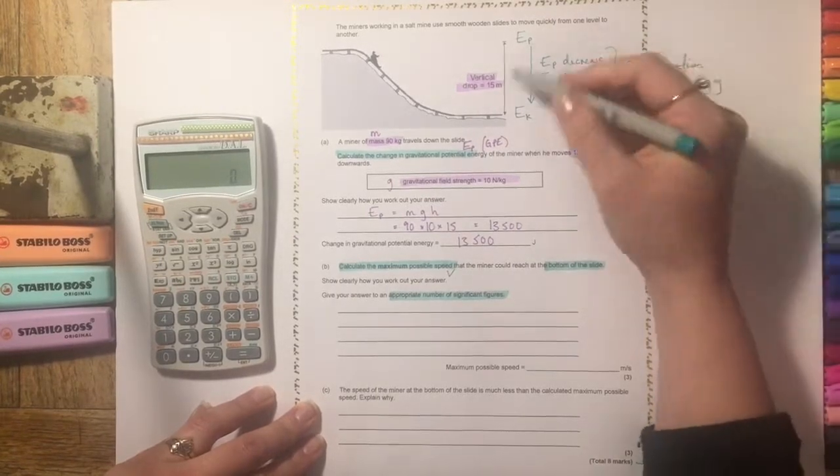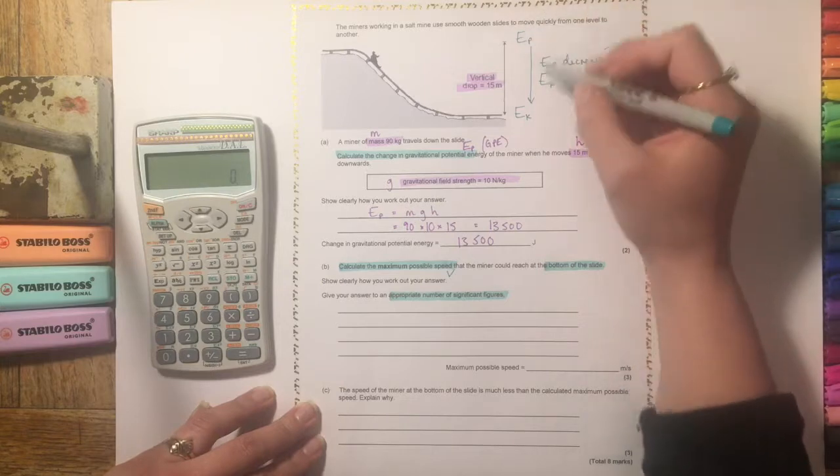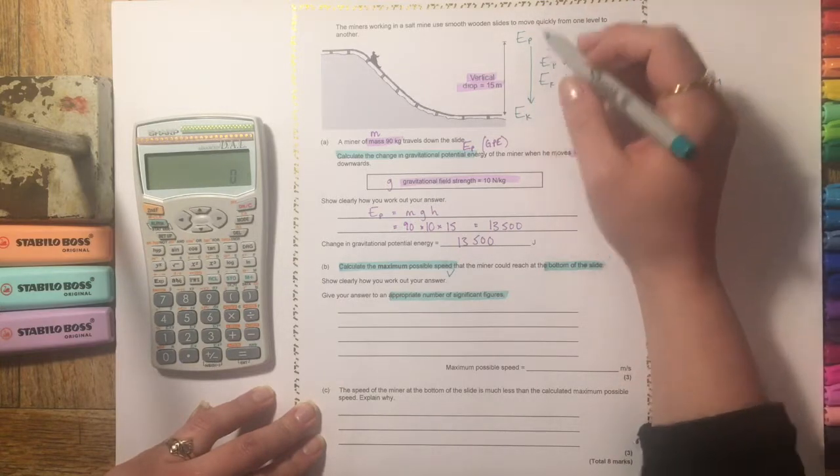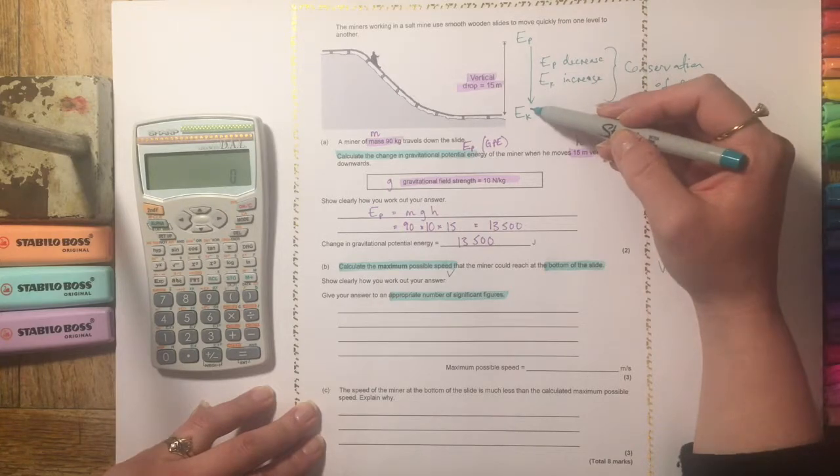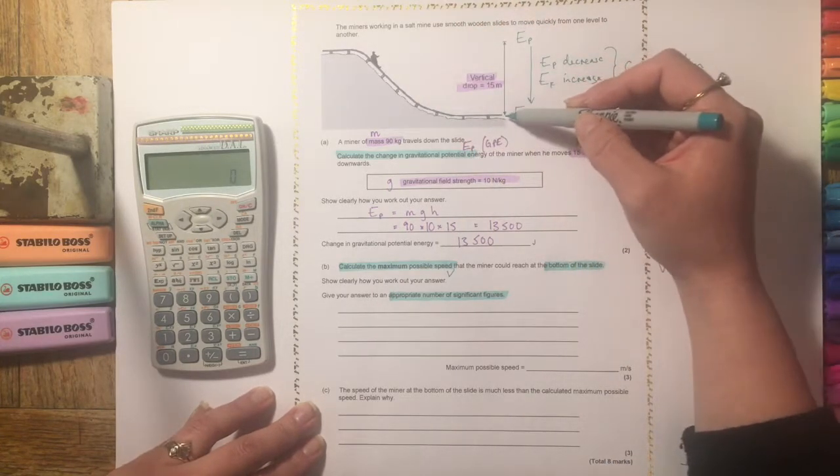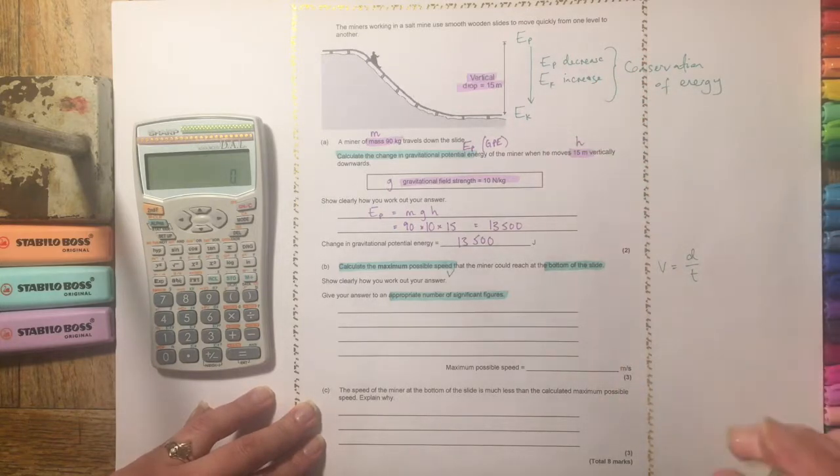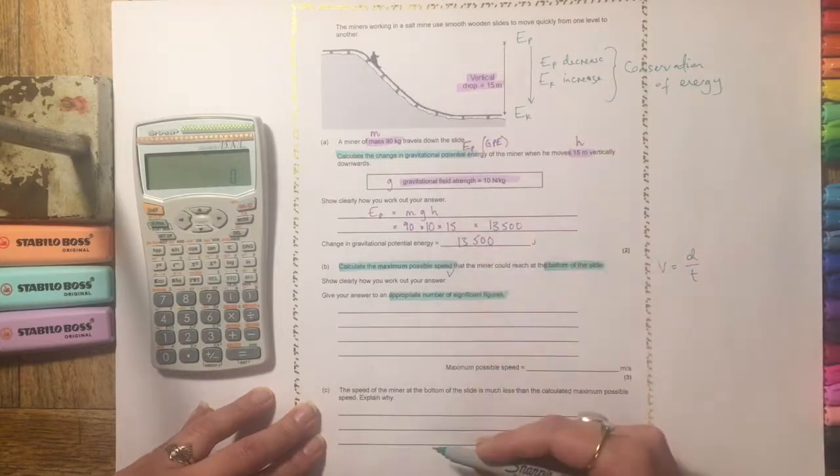So in a perfect closed system, all of the gravitational potential energy in the gravitational potential energy store at the top will have been transferred into the kinetic energy store by the time the miner gets down to the bottom. So that's what you need to remember in these sorts of questions, because it's quite a common structure.